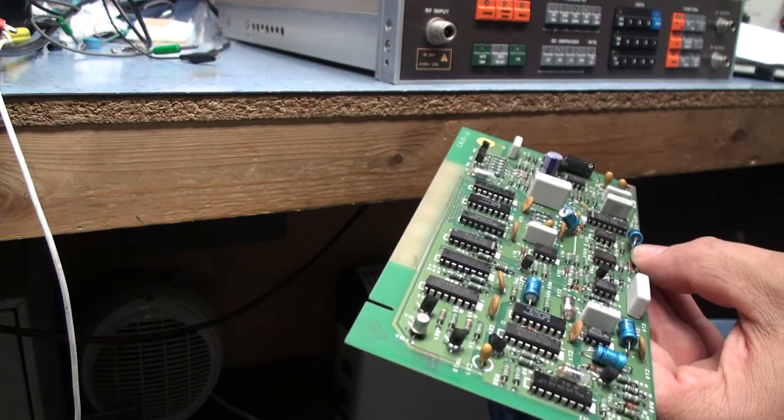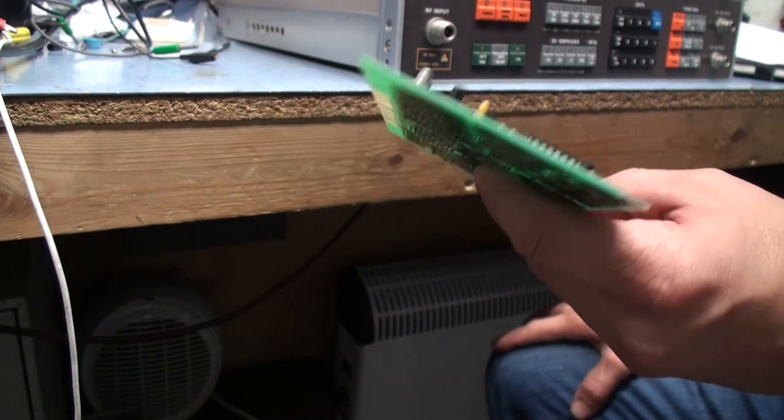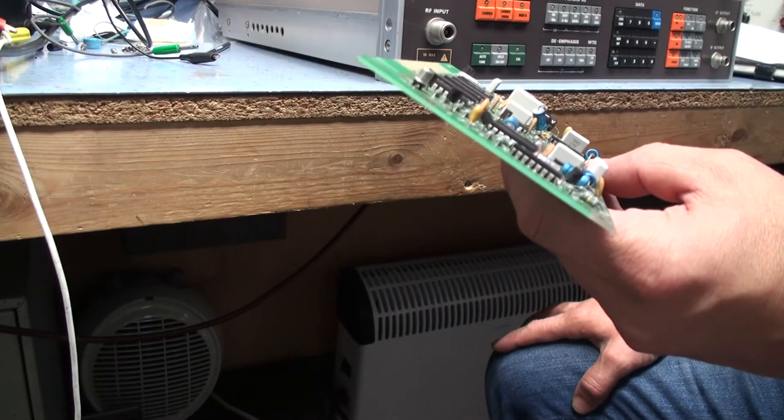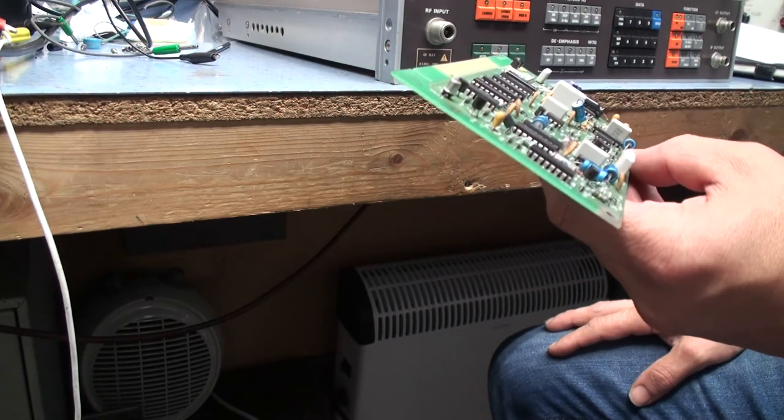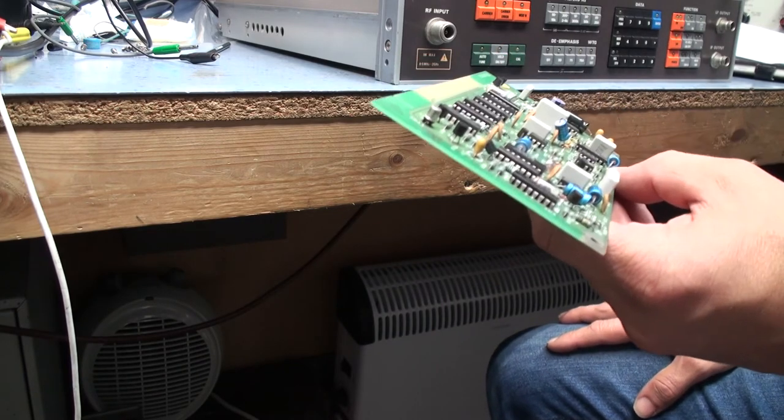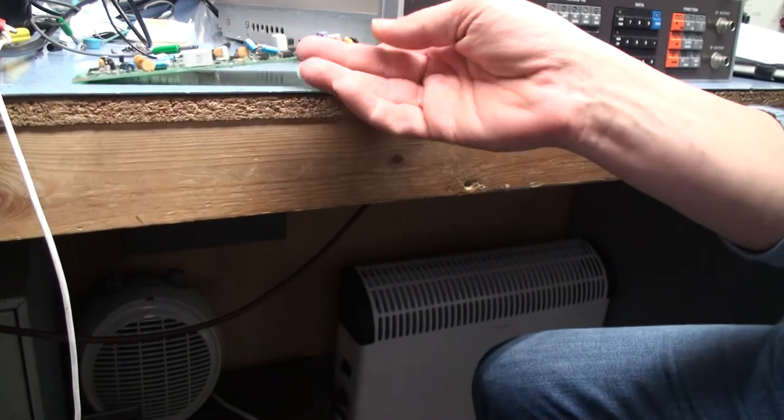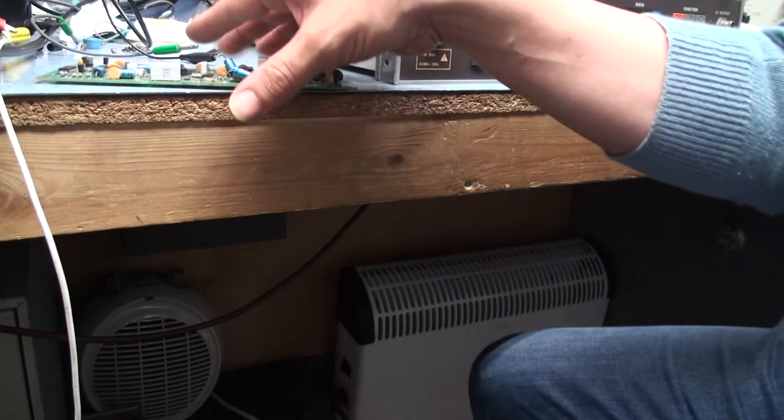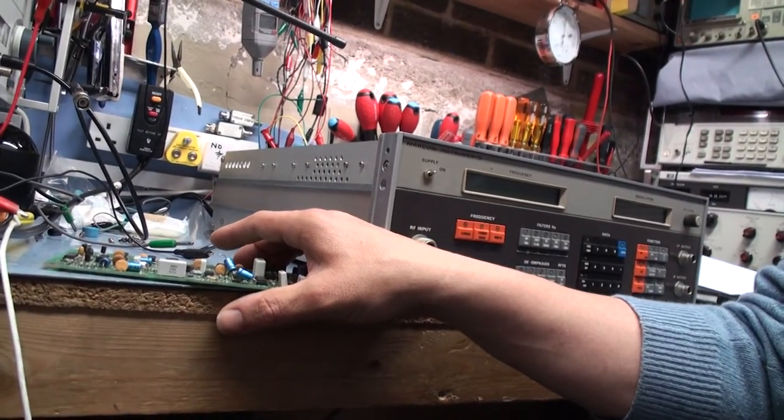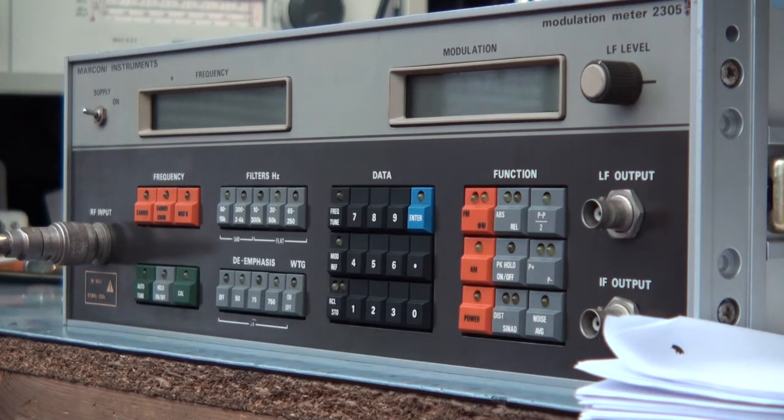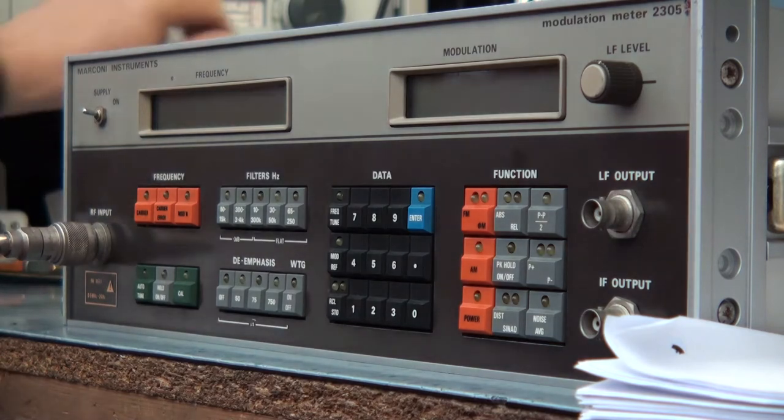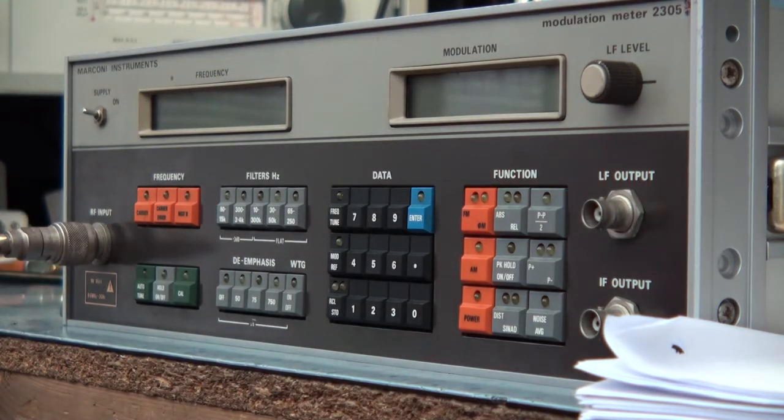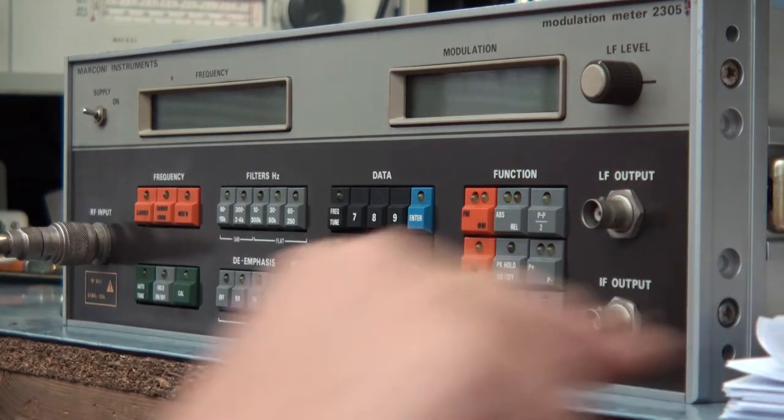Going through the paperwork and manuals, one thing I've ascertained is the reason why the thing stops working after a while is the internal oscillator which is an oven control crystal oscillator stops generating. That's quite a common problem with these internal oscillators on these Marconi instruments. Same with my Marconi 2019, it's a known problem that the oscillators aren't that great and are prone to just stalling.